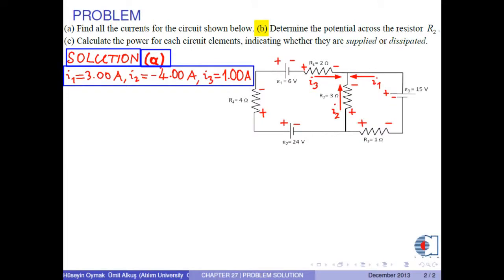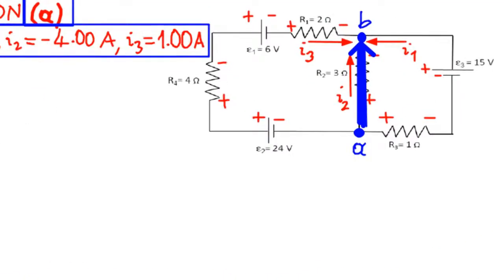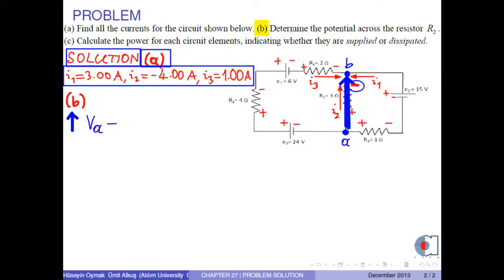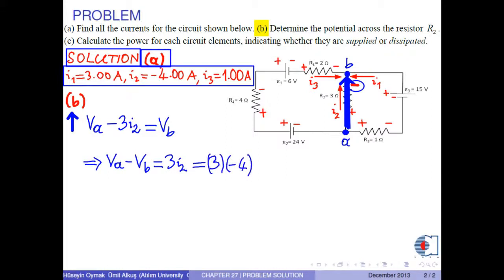Part B: Determine the potential across resistor R2. Using the upward direction from A to B, the potential at A is VA. For R2, we take the negative sign and calculate the potential as negative 3 times I2. We then reach VB. So VA minus VB = 3I2. With I2 = negative 4 amperes, we find negative 12 volts.